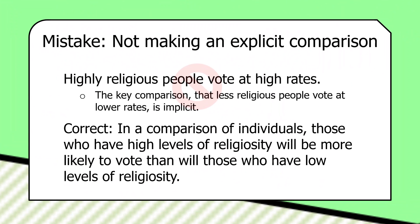A second mistake is not making an explicit comparison. For example: 'Highly religious people voted at high rates.' It may be implied that less religious people voted at low rates, but don't leave it implicit. Make the comparison explicit: 'In a comparison of individuals, those who have high levels of religiosity will be more likely to vote than those who have low levels of religiosity.'